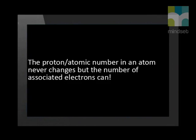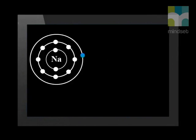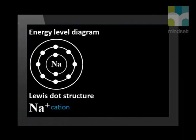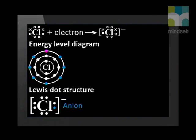The proton or atomic number in an atom never changes, but the number of associated electrons can. Atoms of metallic elements can lose electrons from their outer level, resulting in an excess positive charge from the protons in the nucleus. This positive ion is called a cation. Usually, a non-metallic element gains electrons, resulting in an excess of negative charge, so a negative ion called an anion is formed.